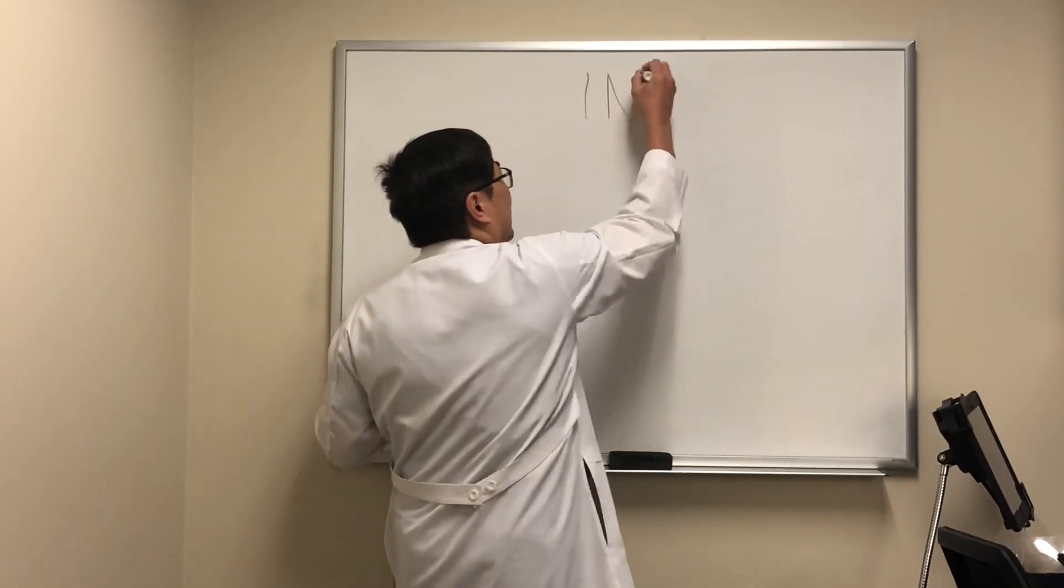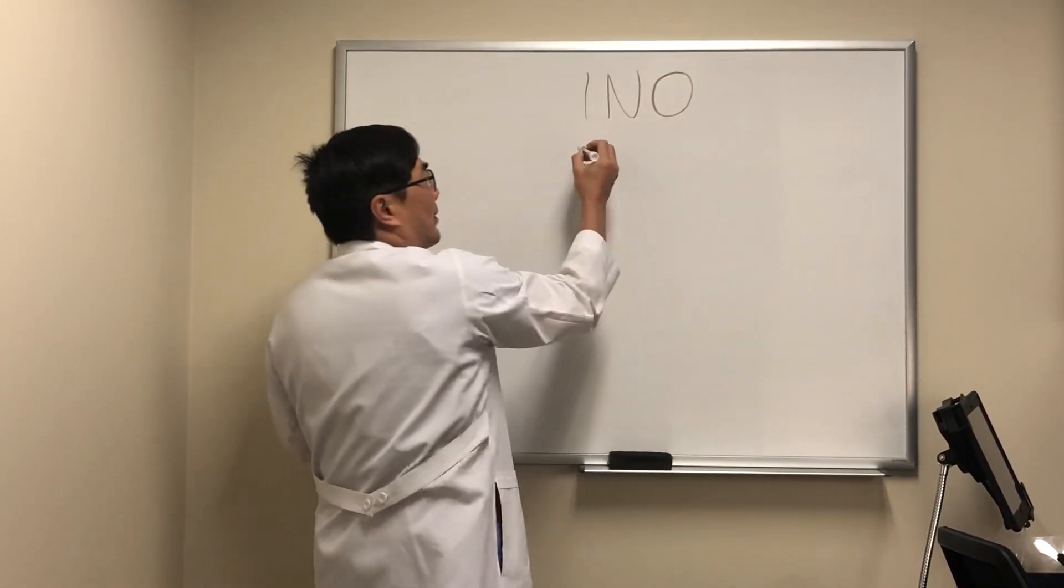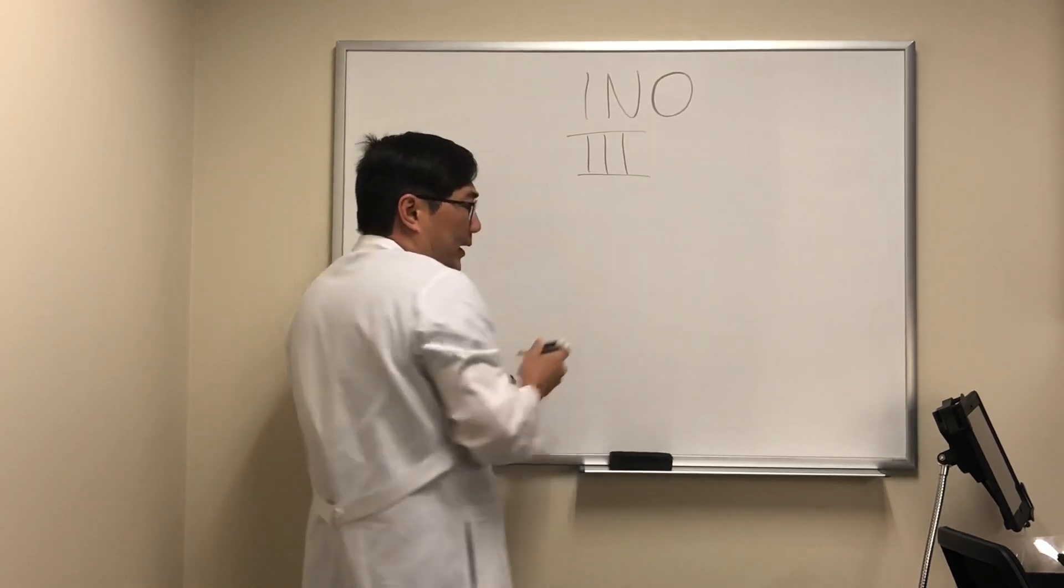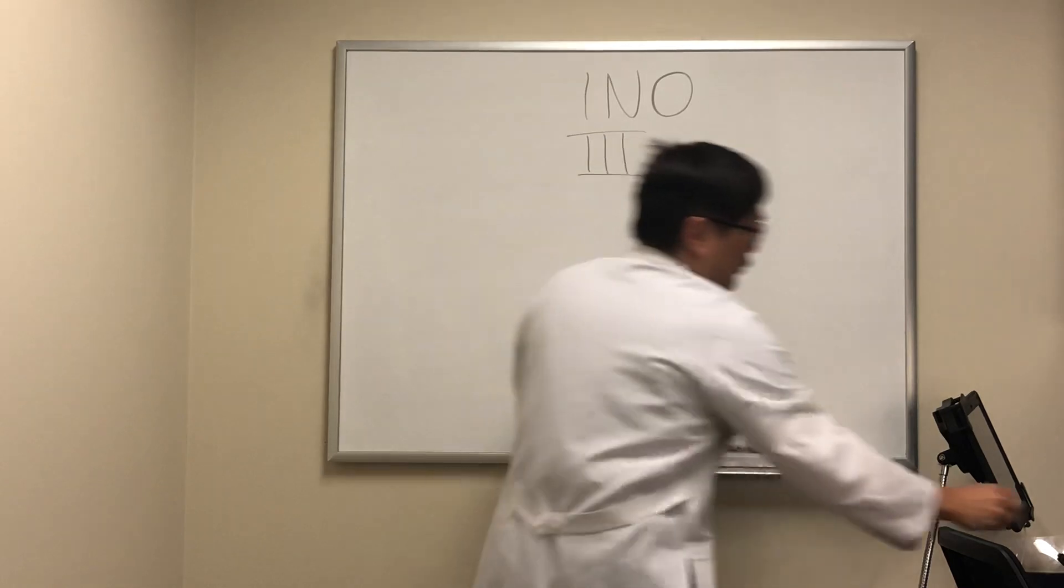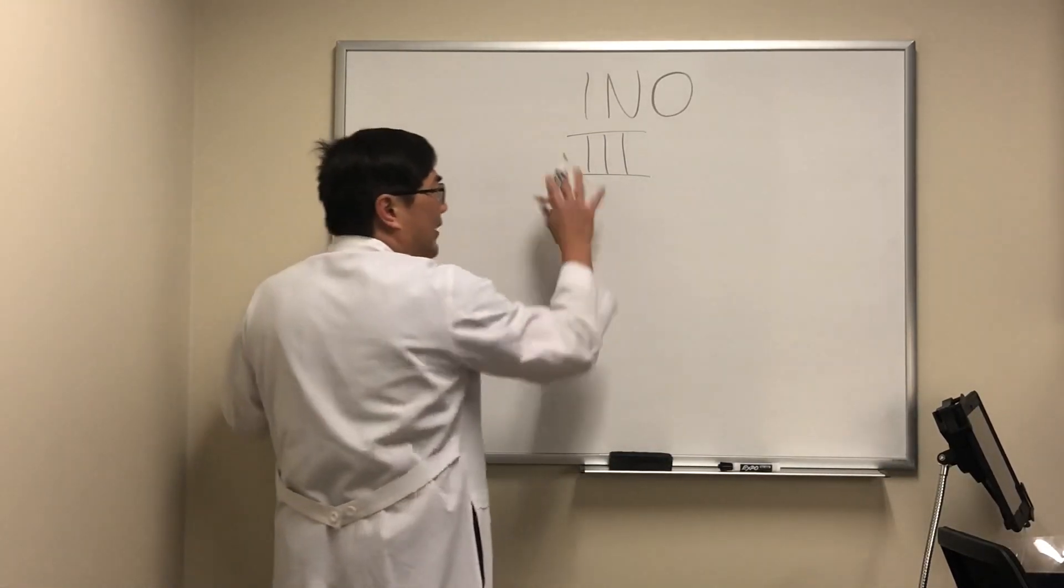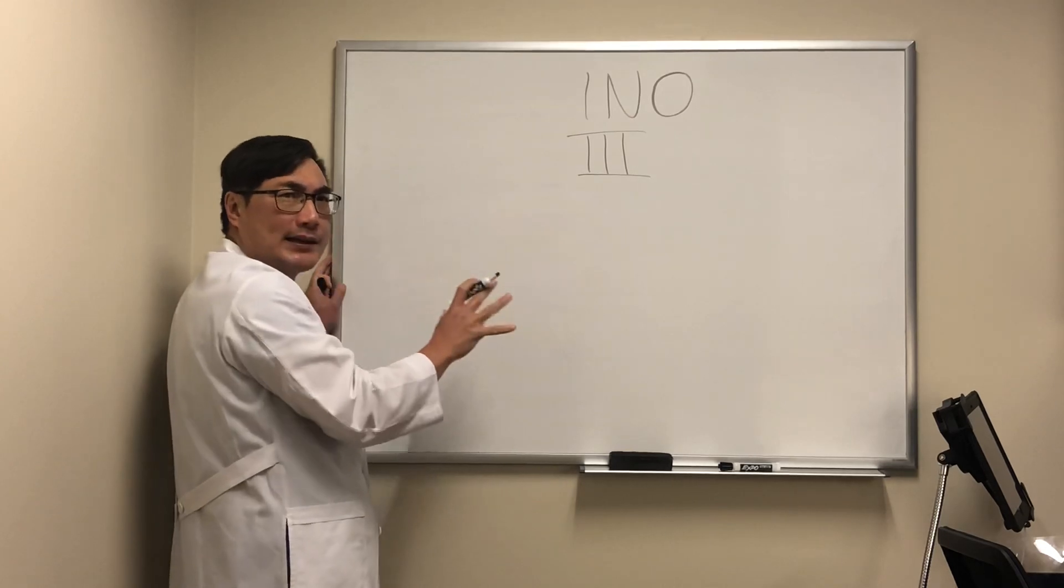Today we're going to be talking about how to differentiate an internuclear ophthalmoplegia from a partial third nerve palsy. You might be thinking that these would be relatively easy to differentiate, but there are common features to both that make it a little bit difficult.